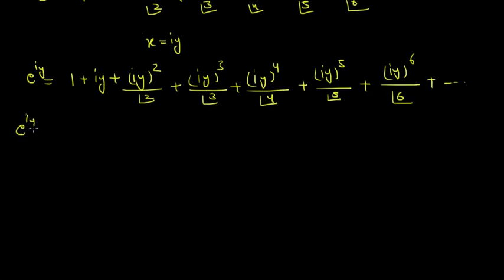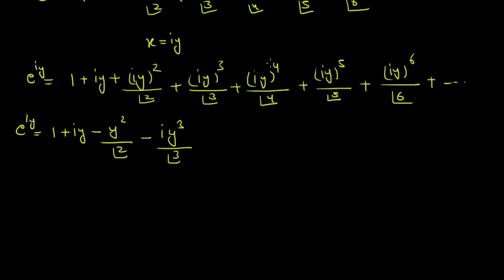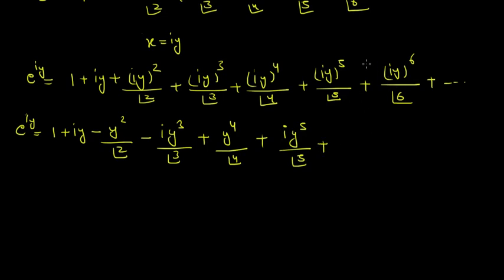Now let's solve this. E raised to power iota y equals 1 plus iota y. Iota squared is minus 1, so minus y squared by 2 factorial. The next term has iota squared times iota, giving minus iota y cubed by 3 factorial. The next term has iota squared squared which is plus 1, giving plus y to the power 4 by 4 factorial. Then iota to the power 5 leaves one iota remaining, giving plus iota y to the power 5 by 5 factorial. And iota squared is minus 1, with minus 1 to the power 3 being minus, giving minus y to the power 6 by 6 factorial and so on.